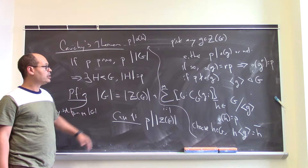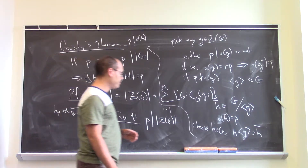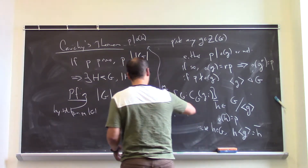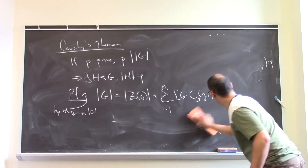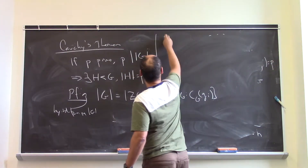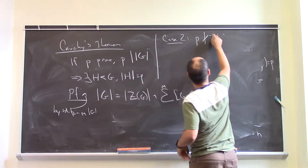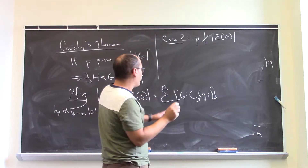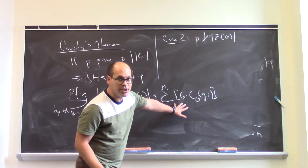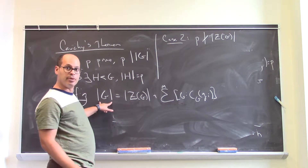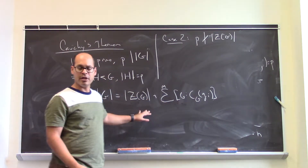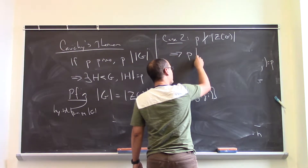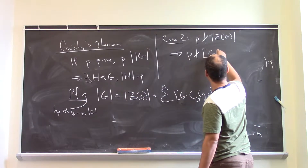Therefore we can assume that p doesn't divide the order of the center. Case two: p doesn't divide the order of the center. If p doesn't divide the order of the center but p divides the order of the group, then p must fail to divide at least one of the index terms [G : C_G(gᵢ)] in the class equation — because if p divided all of them but not the center term, p couldn't divide the total order of the group.